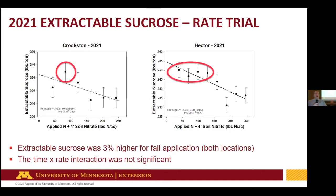Looking at fall versus spring, the extractable sucrose was 3% higher for the fall application. This was pretty consistent at both locations. There was no interaction — the treatments themselves didn't respond differently based on whether you used fall versus spring application. It was just slightly higher on average for all nitrogen rates with the fall application.